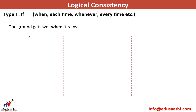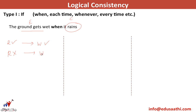Let's take the first example: the ground gets wet when it rains. First, identify cause and effect — the ground getting wet is the effect, and raining is the cause. If it rains, will the ground get wet? Yes, definitely. If it does not rain, will the ground get wet? I don't know, because the ground can also get wet if someone takes a bucket of water and throws it on the ground. So I don't know whether the ground will get wet if it doesn't rain.